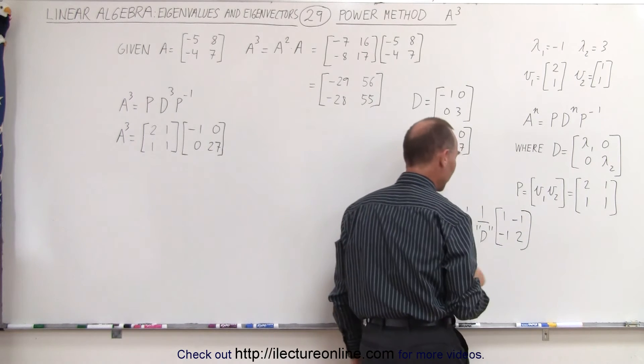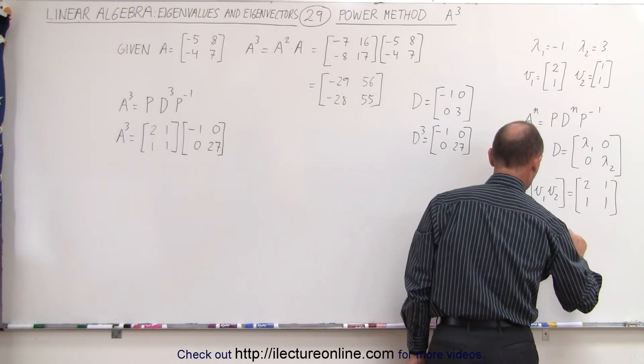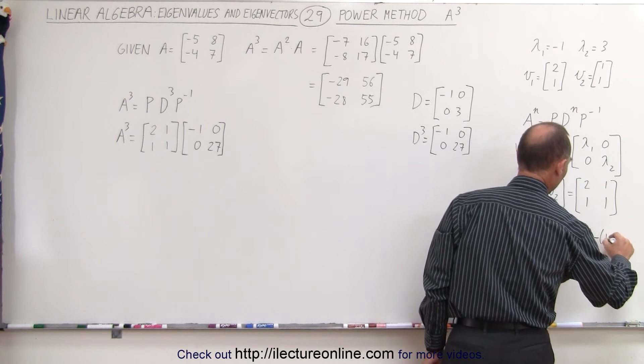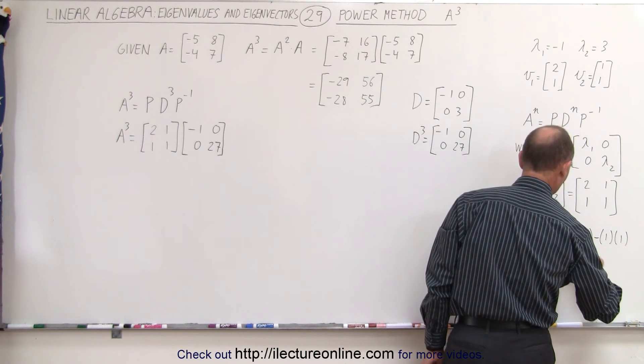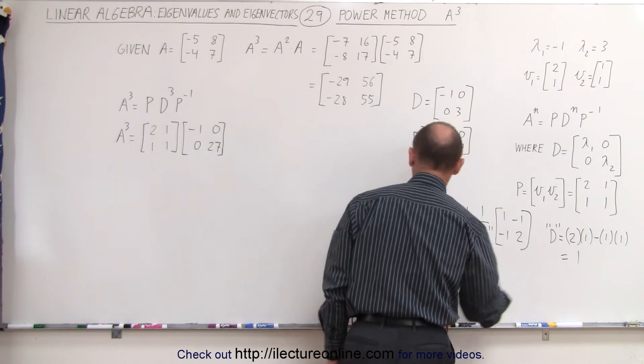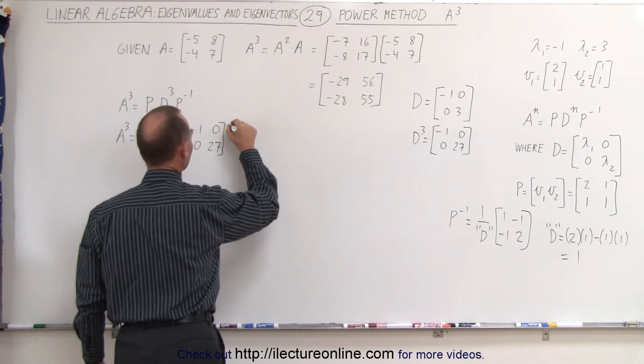And it turns out from doing it on the last video, we know that the determinant is equal to 2 times 1 minus 1 times 1, which is equal to 1. Therefore, 1 divided by 1 is 1, and the inverse of the matrix is simply equal to this. And that goes over here.